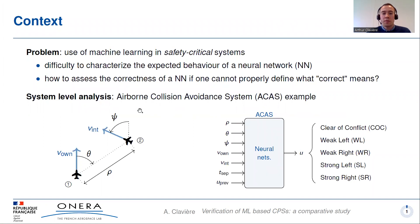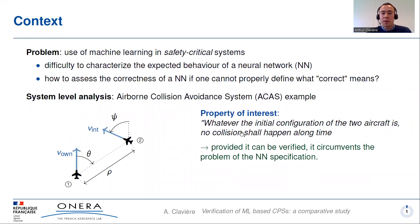To illustrate, let me give the example of the airborne collision avoidance system with two aircraft: an ownship denoted by one and the intruder denoted by two. To avoid a collision, the ownship is equipped with a neural network based controller that produces horizontal maneuver advisories based on some inputs, including geometrical variables describing the encounter between the two aircraft. Regardless of what we may expect from the neural network, we can easily express what we expect from the system — that whatever the initial configuration of the two aircraft is, no collision happens. Provided we can verify this property, we circumvent the problem of the specification of neural networks.